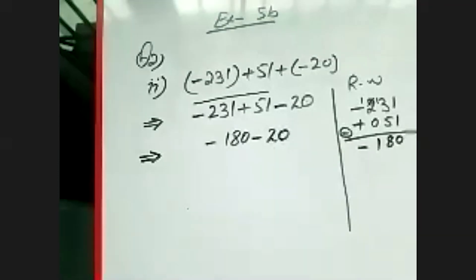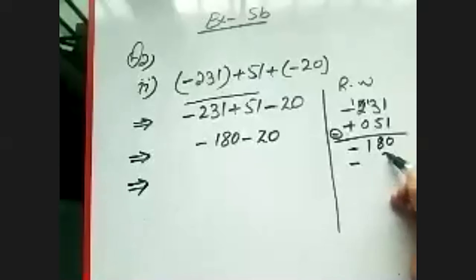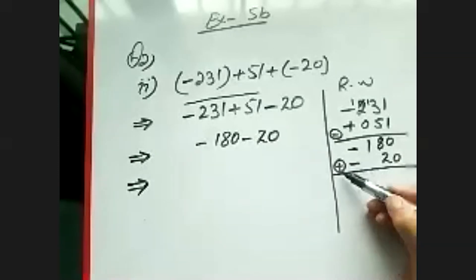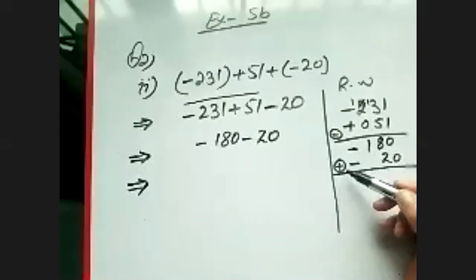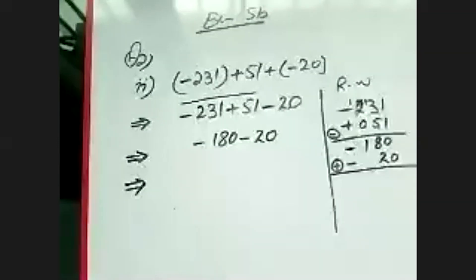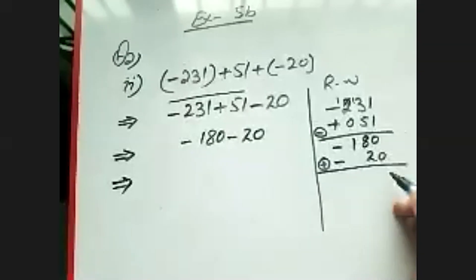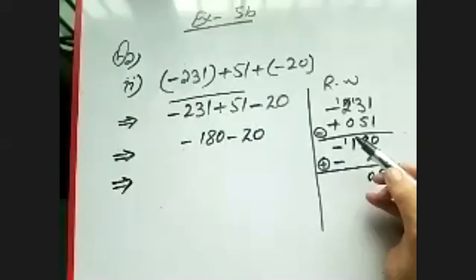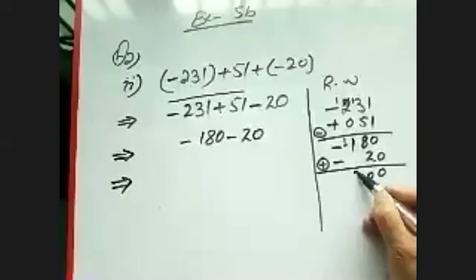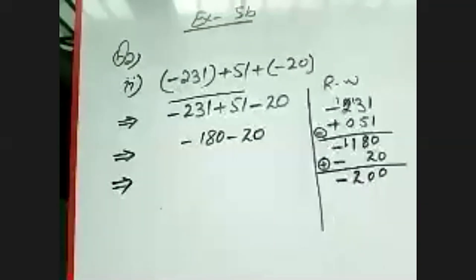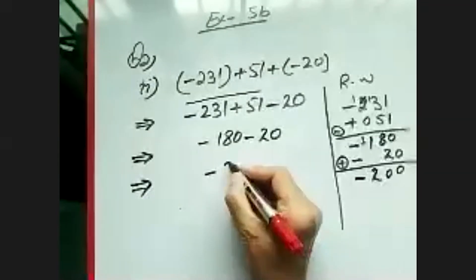In the next step, solve minus 180 and minus 20. Same signs means addition: 0 plus 0 is 0, 8 plus 2 is 10 — write 0 carry 1, then 1 plus 1 is 2, giving 200. The greater value is 180 with a negative sign, so put a negative sign with 200. The answer is minus 200.